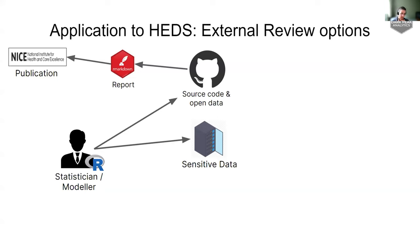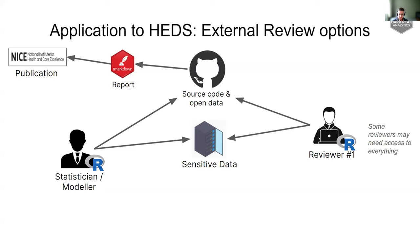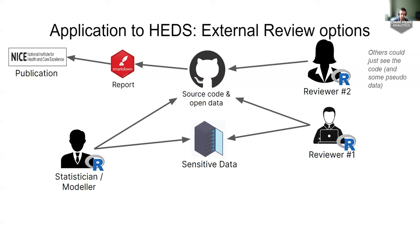This is from a presentation we gave to NICE, where we were looking at the benefits of version control using script-based programming languages. We have a statistician, a modeller, maybe a whole team who have access to source code and open data, but also some sensitive data. Having reviewers who can get hold of open source code and data on GitHub and rerun models and review things rapidly is very valuable. Reviewers who don't need access to sensitive data can still provide insight about the choice of packages and methods applied.